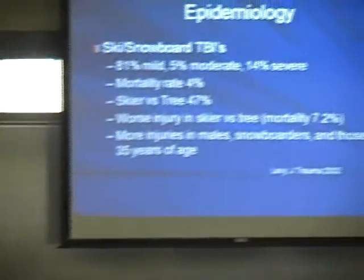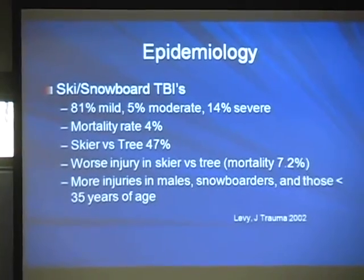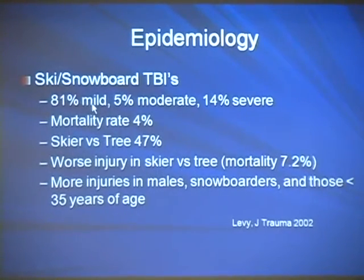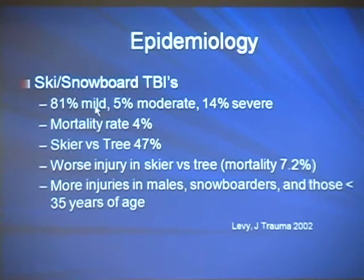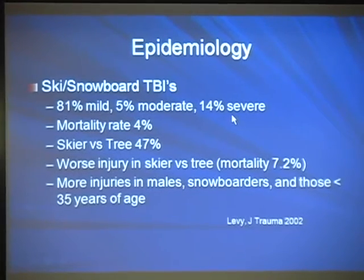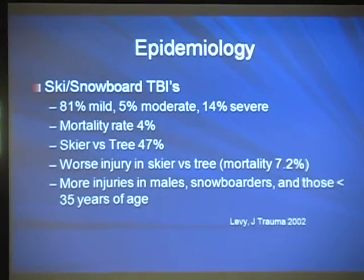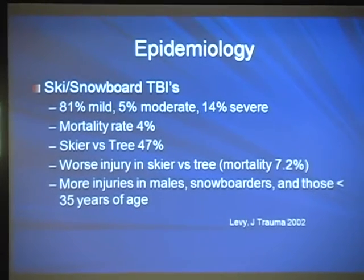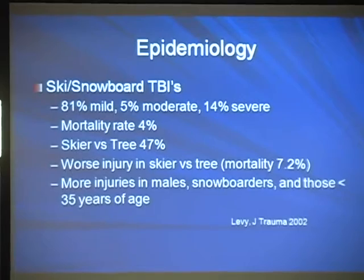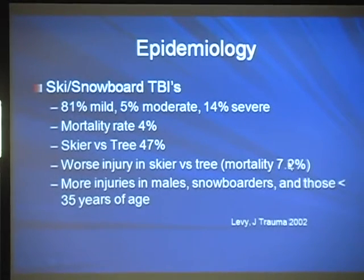There haven't been studies specifically looking at concussion incidence in skiing and snowboarding, but brain injury data as a whole shows the majority are mild — where concussions typically fall. However, 5% are moderate, 14% severe, and notably 4% of brain injuries in ski accidents result in death — a huge deal. The majority of fatal brain injuries happen when athletes run into trees, with a higher mortality rate for those collisions. The moral: don't run into trees. Those most at risk are males, snowboarders, and people under 35 who feel invulnerable.